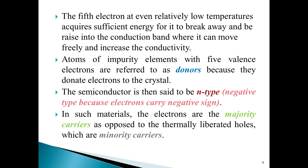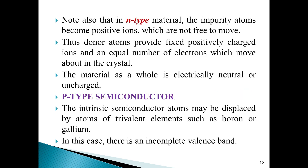In such materials, the electrons are the majority carriers as opposed to the thermally liberated holes, which are minority carriers. Note also that in n-type material, the impurity atoms become positive ions, which are not free to move. Thus, donor atoms provide fixed positively charged ions and an equal number of electrons which move about in the crystal. The material as a whole is electrically neutral or uncharged.